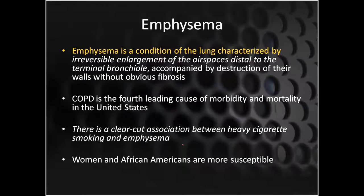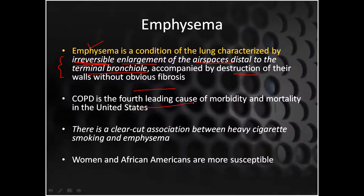Emphysema is an irreversible enlargement of the air spaces distal to the terminal bronchioles, along with the destruction of the walls without obvious fibrosis. Whenever there is irreversible enlargement and destruction beyond the terminal bronchiole, this is termed emphysema. COPD is the fourth leading cause of morbidity and mortality in the United States. There is a clear-cut association between heavy cigarette smoking and emphysema, and women and African Americans are more susceptible to developing emphysema.